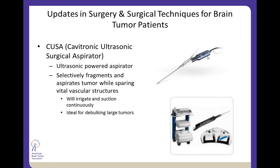Another tool is an ultrasonic aspirator — a large machine with foot pedal control that selectively fragments and aspirates tumor. The irrigation, suction, and energy strength can be modified, so you can get up to critical structures such as nerves and arteries and spare those while still taking down tumor. This is ideal for debulking large tumors — like a very large meningioma. You open the tumor, and instead of spending many minutes or hours peeling away fibrous tissue, you can aspirate with this instrument and save a lot of time for the patient on the table.